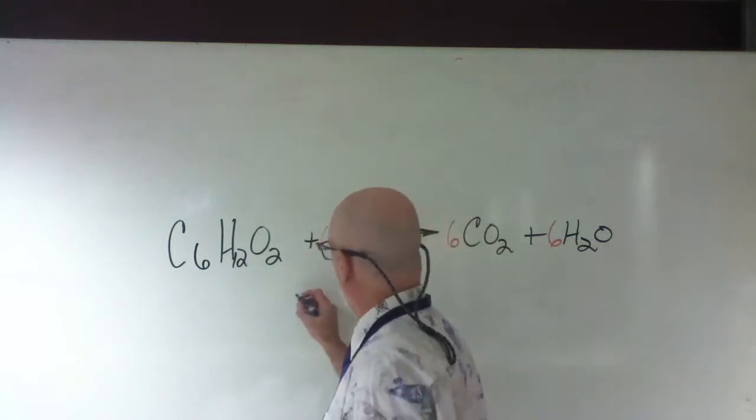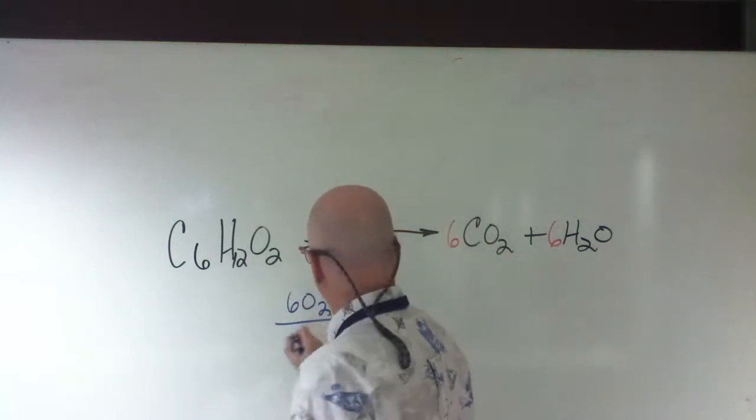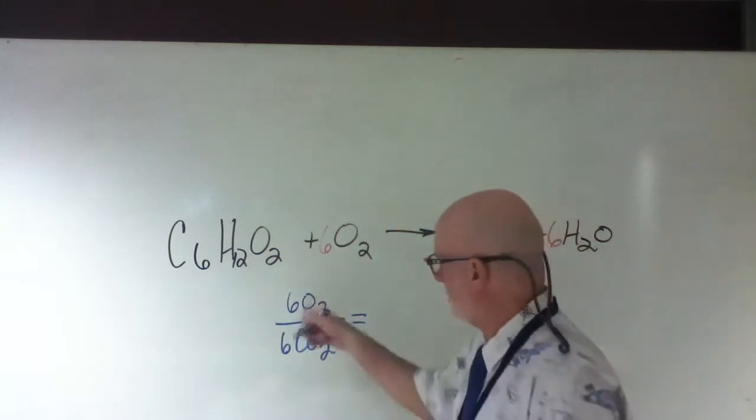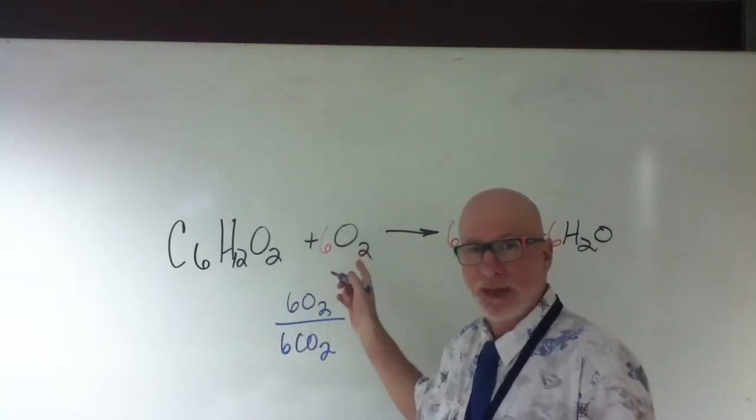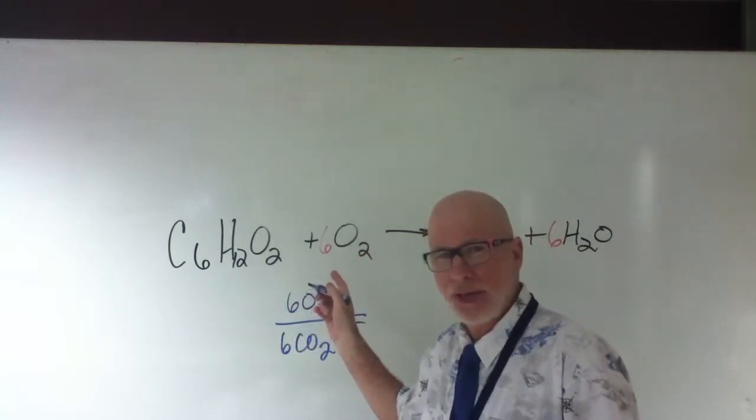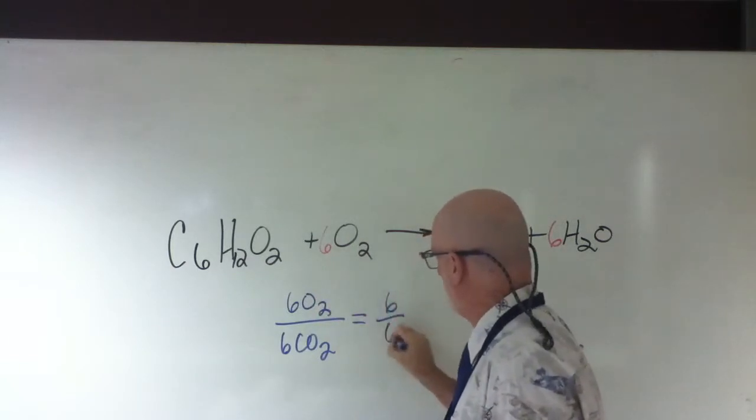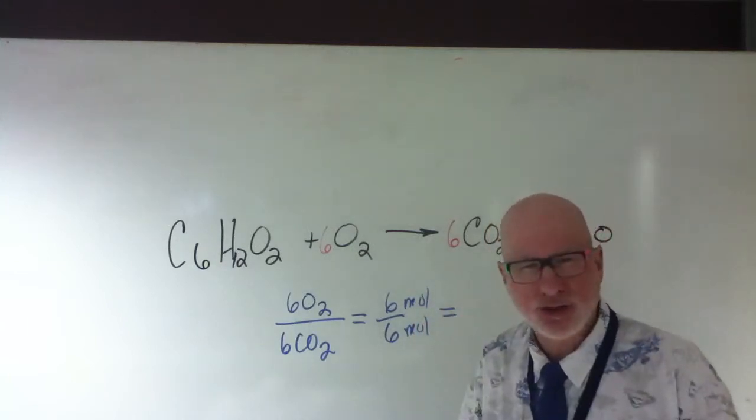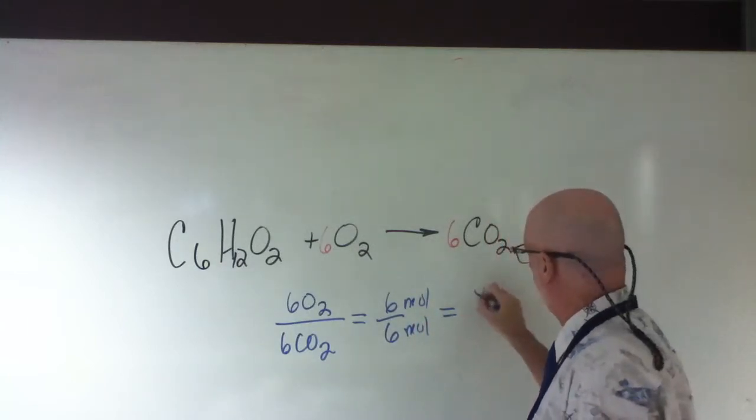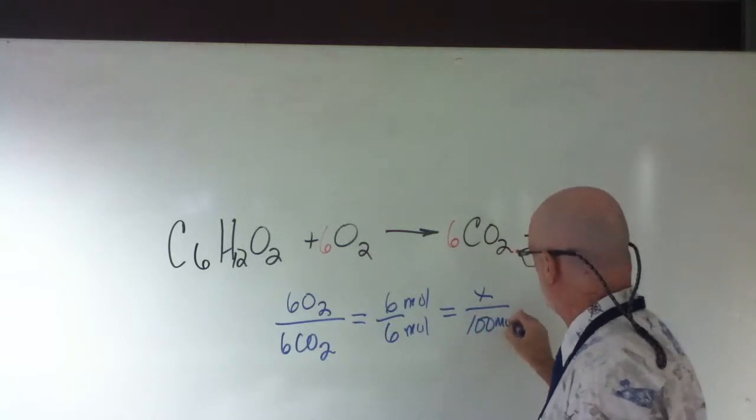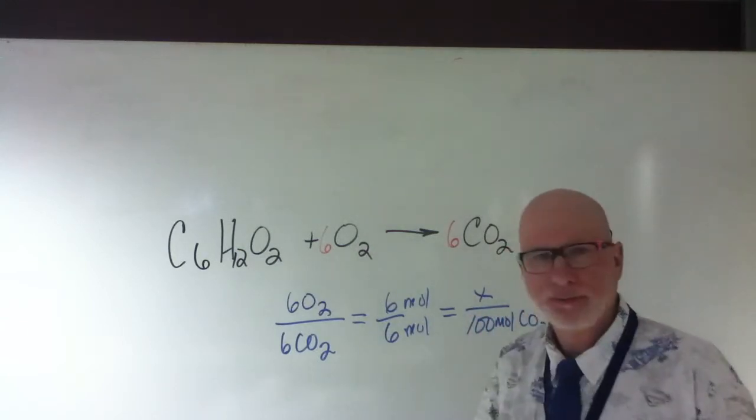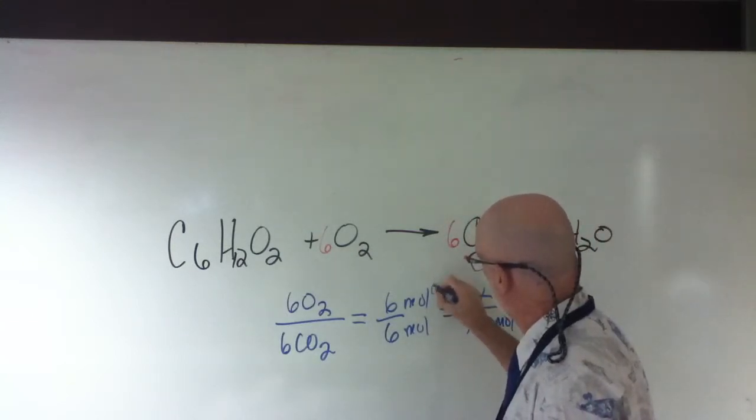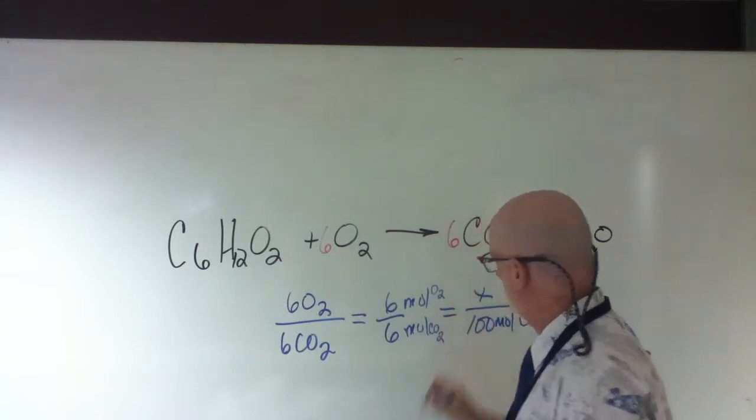So I'm comparing 6O2 with 6CO2. And I know the mole ratio is in the problem. Can I finish a thought, do you think? Or is that okay? Okay. So it's going to be 6 over 6. That's moles. And that's going to be equal to, I'm looking for oxygen and I have 100 moles of CO2. Correct? Yes. This is, sorry, I didn't put this in. This is oxygen and this is CO2.